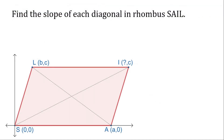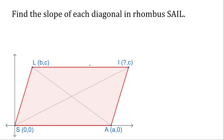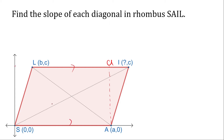For the first problem, find the slope of the diagonals of the rhombus SAIL. So we're going to find the slope of this line. First, we need to fill out the missing coordinate. The distance from the y-axis to this point is A, and the distance from this one to this one is L. Since this is a rhombus, these two sides are equal and parallel, so this will be A plus B.